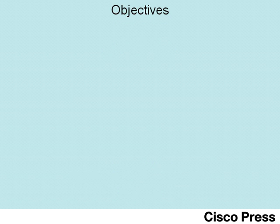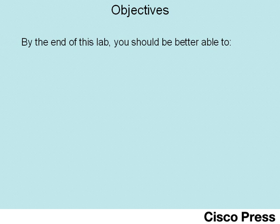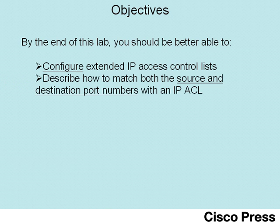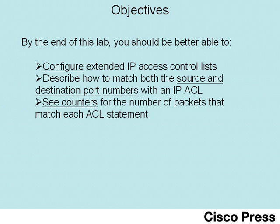This lab has three main objectives. By watching this lab, you should be better able to configure extended IP access control lists, as well as configure one of the trickiest parts of IP extended access control lists — particularly the source and destination port numbers. You'll also understand how to see the counters that show the number of packets that have matched each statement in an access list.